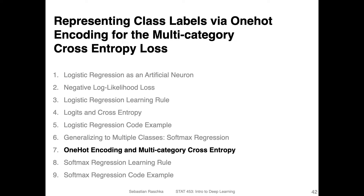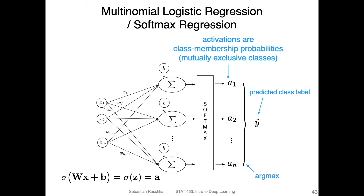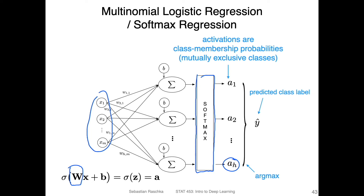In the previous videos, I showed you how the softmax regression model looks like. Now let's talk about the multi-category cross entropy loss that we will need for training such a model, and for that we will also need the one-hot encoding scheme for representing class labels. This is just a recap of a slide I already showed you. We have an input feature vector, and then multiple sets of weight vectors. If we have h classes, we have h weight vectors, which we combine into a matrix W. What we are focusing on now is how we compute this softmax activation from these different net inputs.